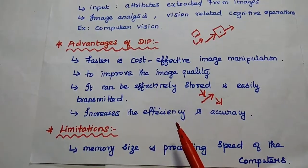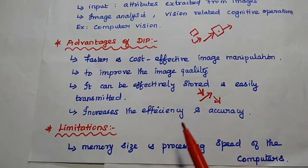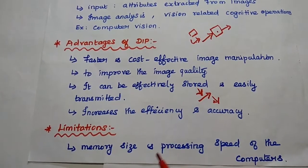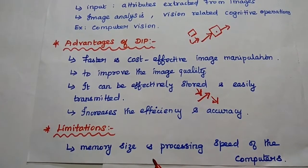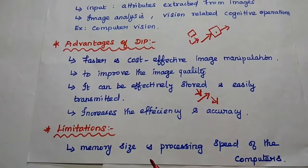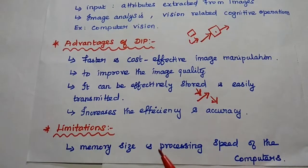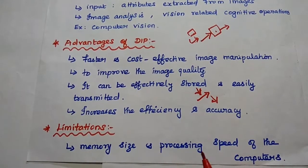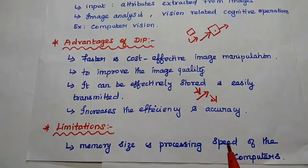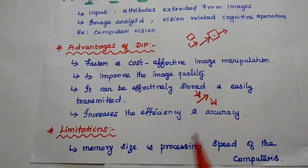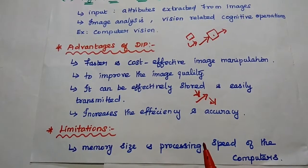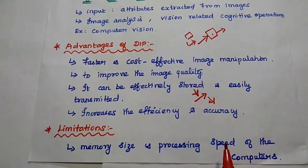At the same time, it has some limitations as well. For example, memory size and storage size, as well as the processing speed of the computer — these two are the main constraints of digital image processing.